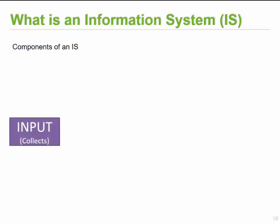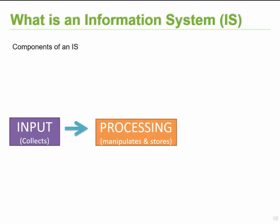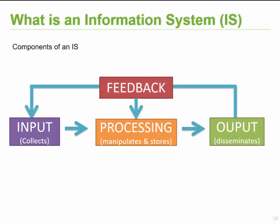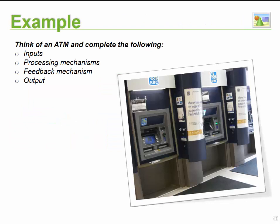Let's recap the components of an information system. Similar to a regular system, first we input something — we collect information. That information is then processed: manipulated and stored. It is then turned into output, where it is disseminated. And we continuously need feedback, so that if there's a mistake with the information, we can go and fix and correct it.